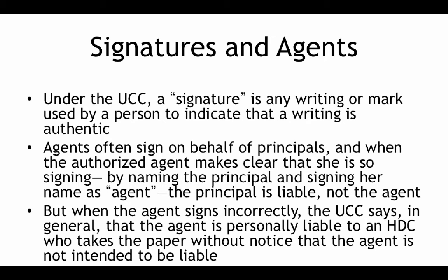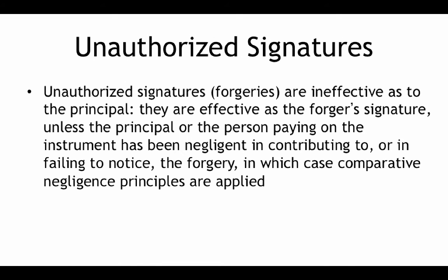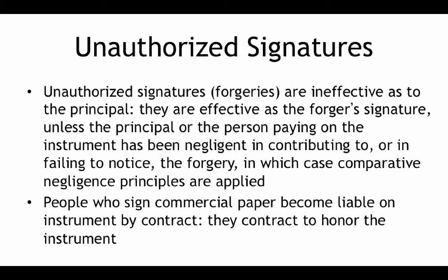But when the agent signs incorrectly, the UCC says in general that the agent is personally liable to an HDC who takes the paper without notice that the agent is not intended to be liable. One situation that comes up is unauthorized signatures or forgeries. They're ineffective as to the principal and effective as the forger's signature, unless the principal or the person paying an instrument has been negligent — for example, if a stamp or some other means allows the unauthorized signature to take place, then they may have liability for it.